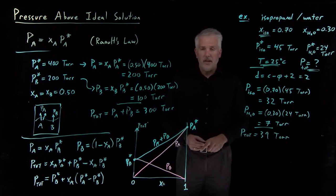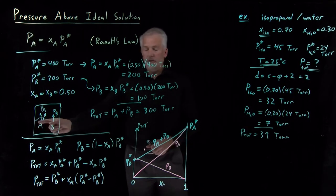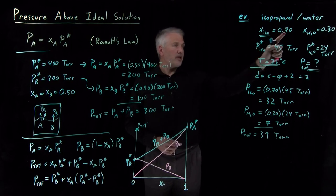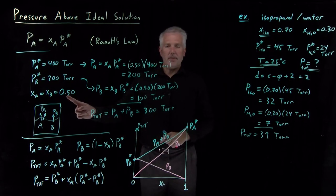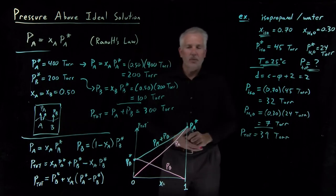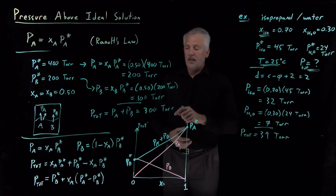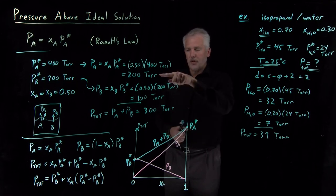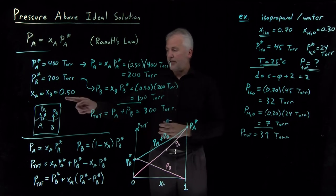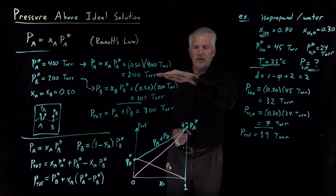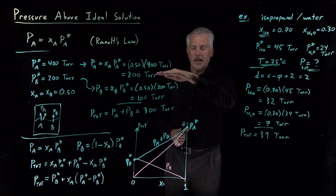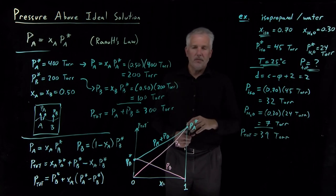Where things get more interesting is when we think about the mole fractions in the vapor phase rather than the liquid phase. The mole fractions we've used — 70% isopropanol or 50-50 A and B — are mole fractions in the liquid. In the 50-50 liquid mixture, there ended up being twice as many A molecules as B molecules in the vapor phase, so the vapor-phase mole fractions will be different, and that's what we'll explore next.